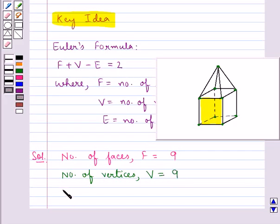Next, we are supposed to find the number of edges of this figure, E. This is one edge, 2, 3, 4, 5, 6, 7, 8, 9, 10, 11, 12, 13, 14, 15. So E becomes equal to 16.